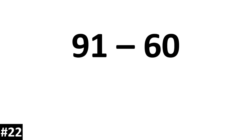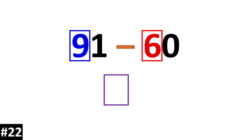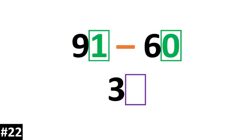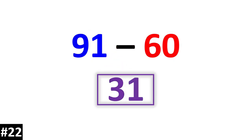91 minus 60. 9 10s minus 6 10s gives us 3 10s. Looking to the ones: 1 minus 0 is 1. So our answer is 31.